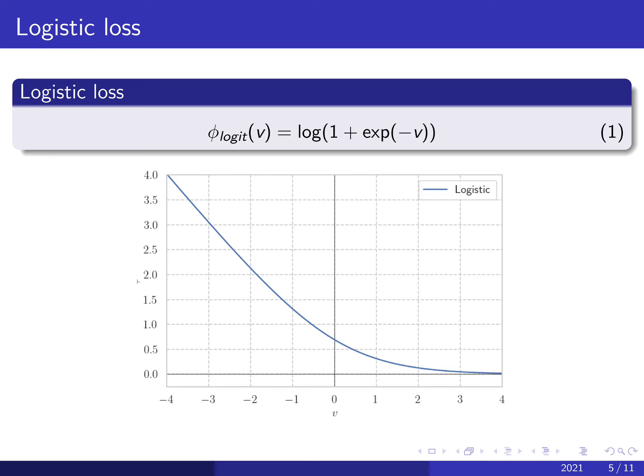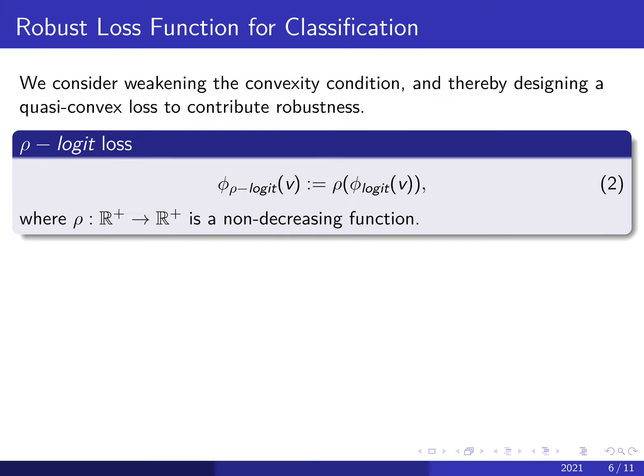In addition, loss function is crucial for classification tasks. So next, we design a robust loss function that can prevent the misclassified nodes from dominating the training loss. As you know, the logistic loss or called cross-entropy loss is one of the most commonly used loss functions, which is convex. However, as pointed out by some literature, this loss function is sensitive to outliers, whereas non-convex losses are more robust. So, we consider using quasi-convex loss for robustness, just as the row here, which is a non-decreasing function.